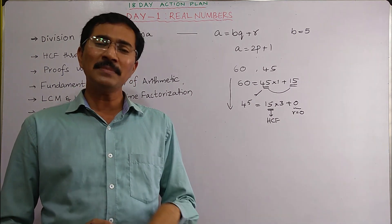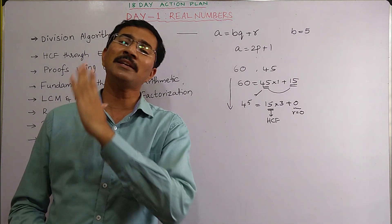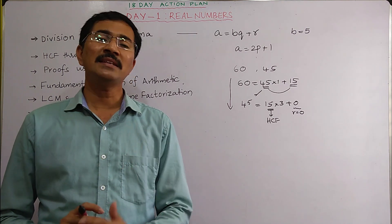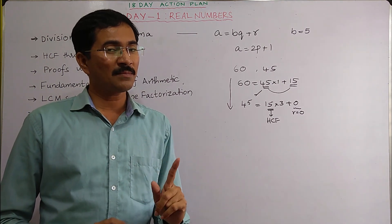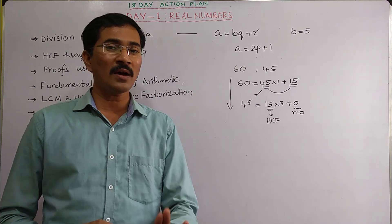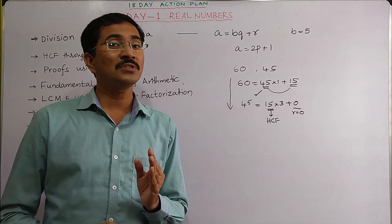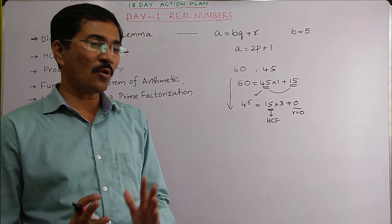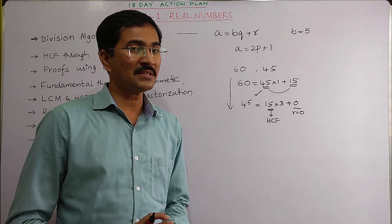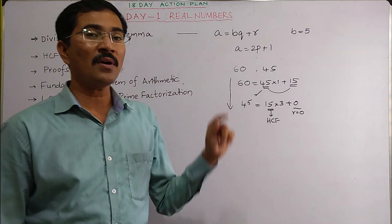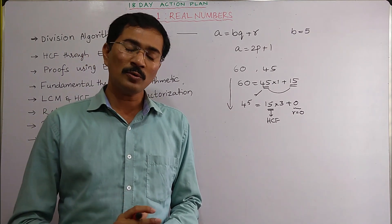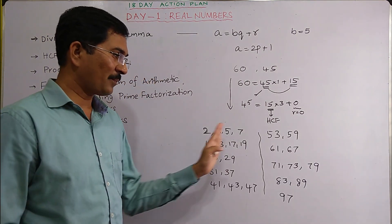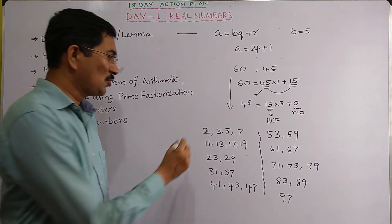Speaking of prime numbers: except 2, all prime numbers are odd numbers. 2 is the only even prime number. Even numbers are completely divisible by 2; odd numbers give 1 as remainder when divided by 2. You should also know the prime numbers up to 100 — there are 25 prime numbers up to 100. This is very important.